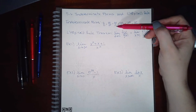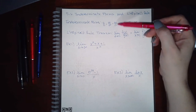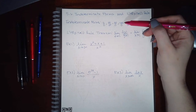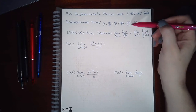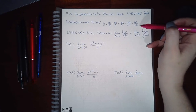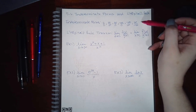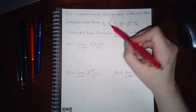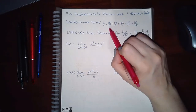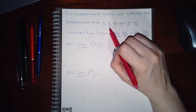Infinity over zero is another indeterminate form, as is negative infinity over zero, negative infinity over infinity, and infinity over negative infinity. The only reason I don't list negative infinity over negative infinity is because the signs reduce, bringing us back to infinity over infinity.